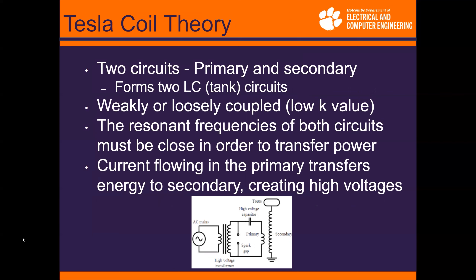A Tesla coil is comprised of two circuits: primary and secondary. They form two capacitance and inductance banks where voltage and current are stored. They are weakly coupled by a low K value. The goal is to match the resonant frequency of both circuits, and they must be close to each other in order to transfer power. The current flowing in the primary transfers energy to the secondary, creating high voltages and discharging through the secondary in lightning-like arcs.